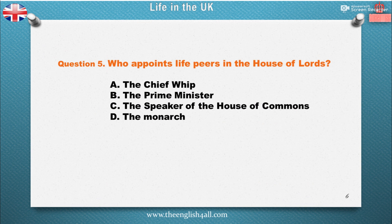Question 5: Who appoints life peers in the House of Lords? A. The Chief Whip. B. The Prime Minister. C. The Speaker of the House of Commons. D. The Monarch. The correct answer is: The Monarch.